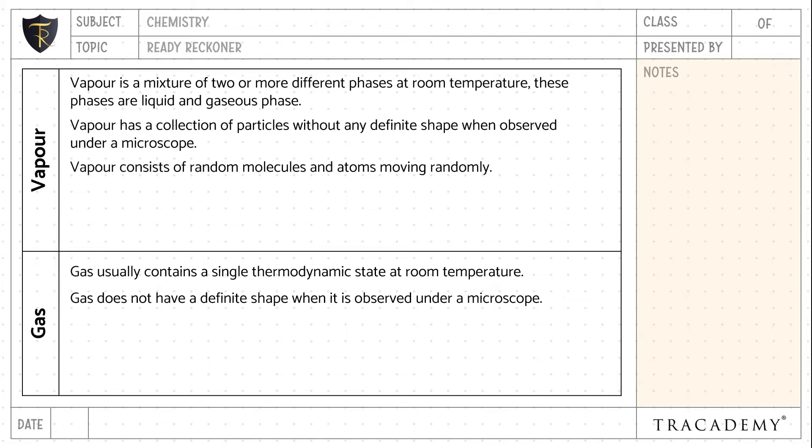Vapor consists of random molecules and atoms moving randomly. Gas also consists of random molecules and atoms moving randomly.